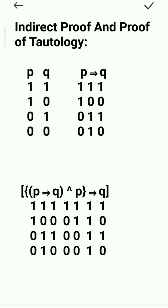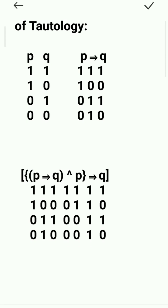The truth value of implication: below implication you find 1, 0, 1, 1. Below P you find 1, 1, 0, 0, 1, 1, 1, 1, because you have to write the truth function.